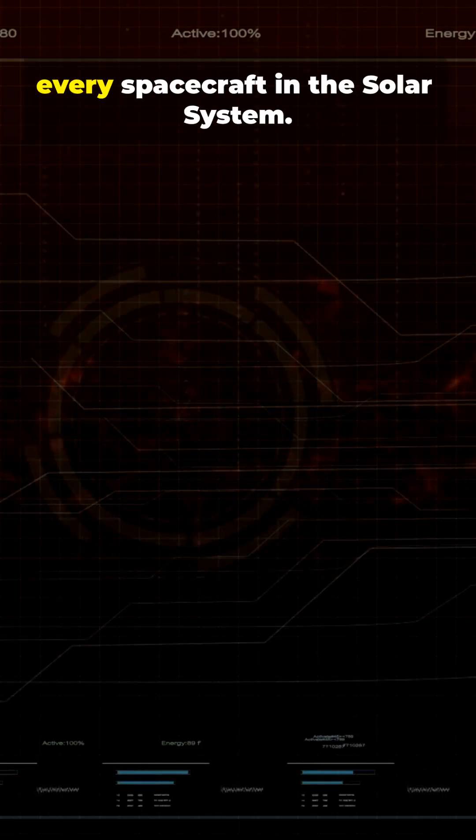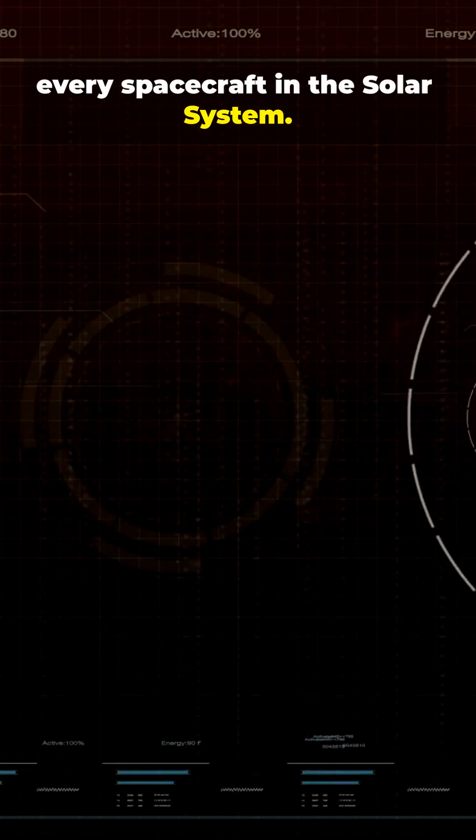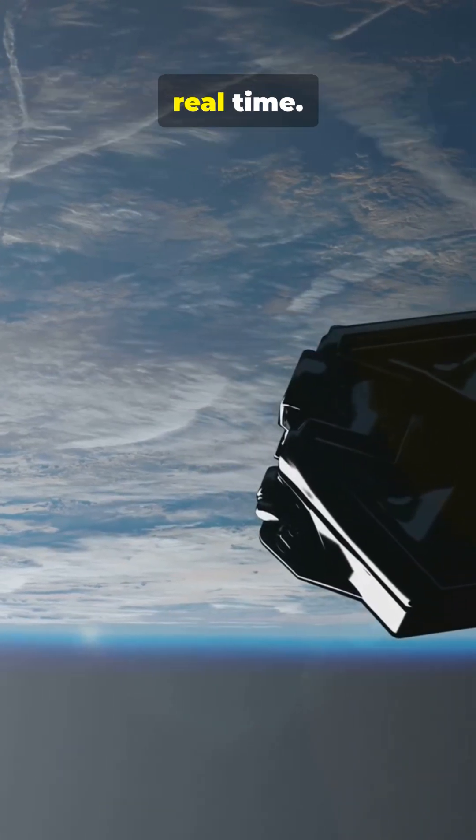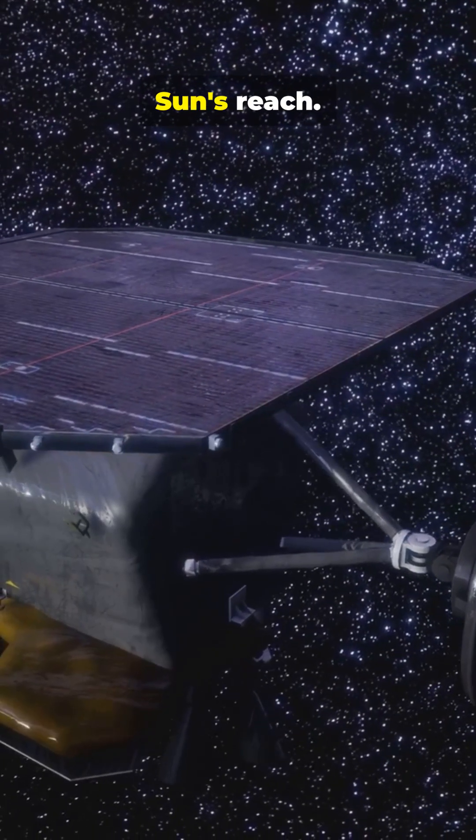Imagine a live map showing every spacecraft in the solar system, from low-Earth clusters densely packed around Earth in real time to Voyager at the edge of the Sun's reach.